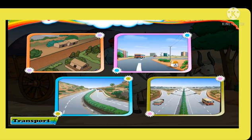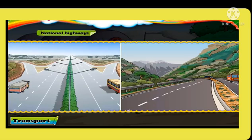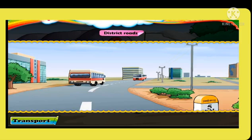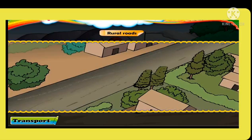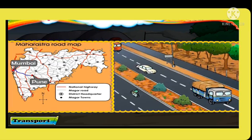Roads are divided into rural roads, district roads, state highways and national highways. National and state highways are wide and paved — some have four lanes while some have two lanes. These roads are connected to big cities, district roads to smaller cities, and rural roads to small villages. The Mumbai-Pune Expressway is an example of an expressway, which is wider than national highways, well-sealed, and can be covered at high speed as there are fewer crossings and turns.